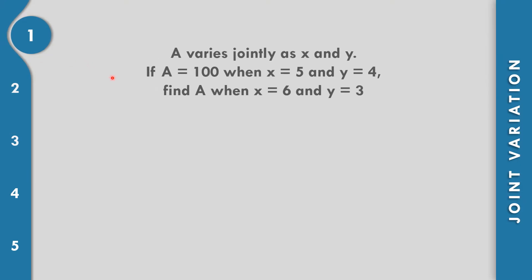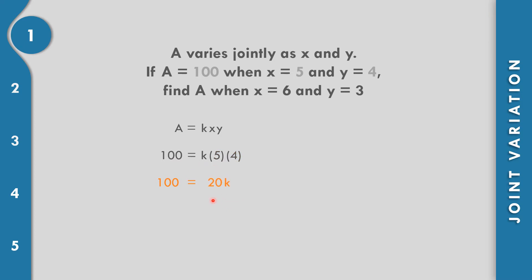Let us solve example number one. A varies jointly as x and y, so the equation is A equals k times x times y. If A equals 100 when x equals 5 and y equals 4, we substitute: 100 equals k times 5 times 4, which gives 100 equals 20k. Dividing both sides by 20, we get k equals 5.